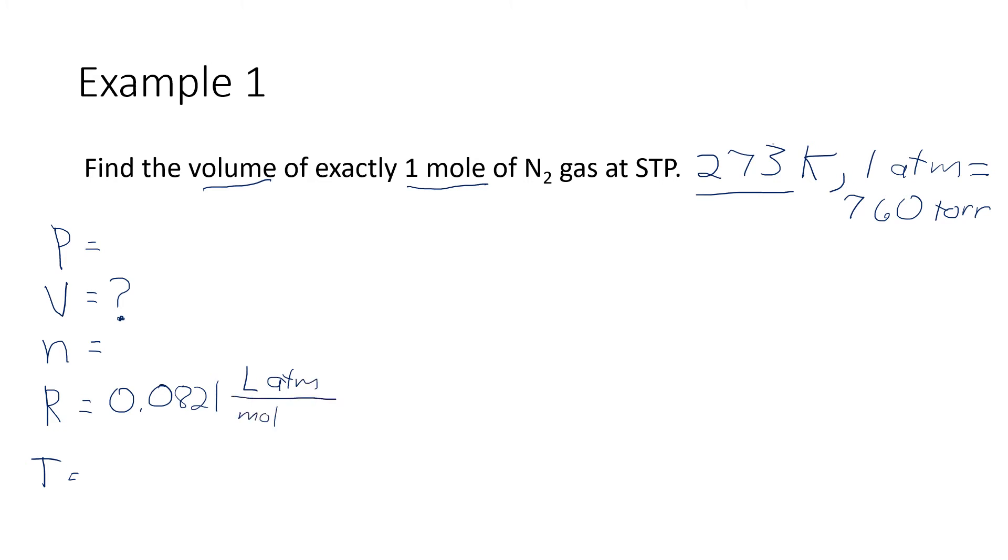And this is going to lock the other parameters into particular units. Volume must be liters. Pressure must be atmospheres. So up here in the top, let's go ahead and write in that one atmosphere. We are not going to need the 760 Torr because that's going to be the wrong units. Atmospheres are the units that we want.